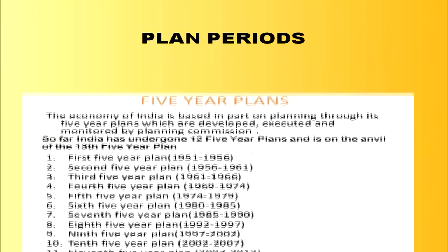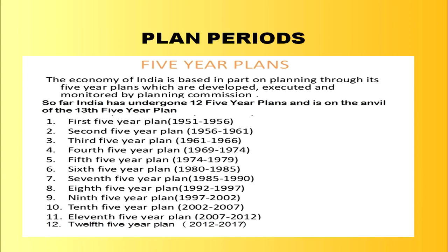To understand achievements during each of the plans, we first need to know how many plan periods have gone by. As the slide shows, we have had 12 five-year plans already. We are just about finishing the 12th five-year plan and on the anvil of the 13th five-year plan, which is to begin from April.